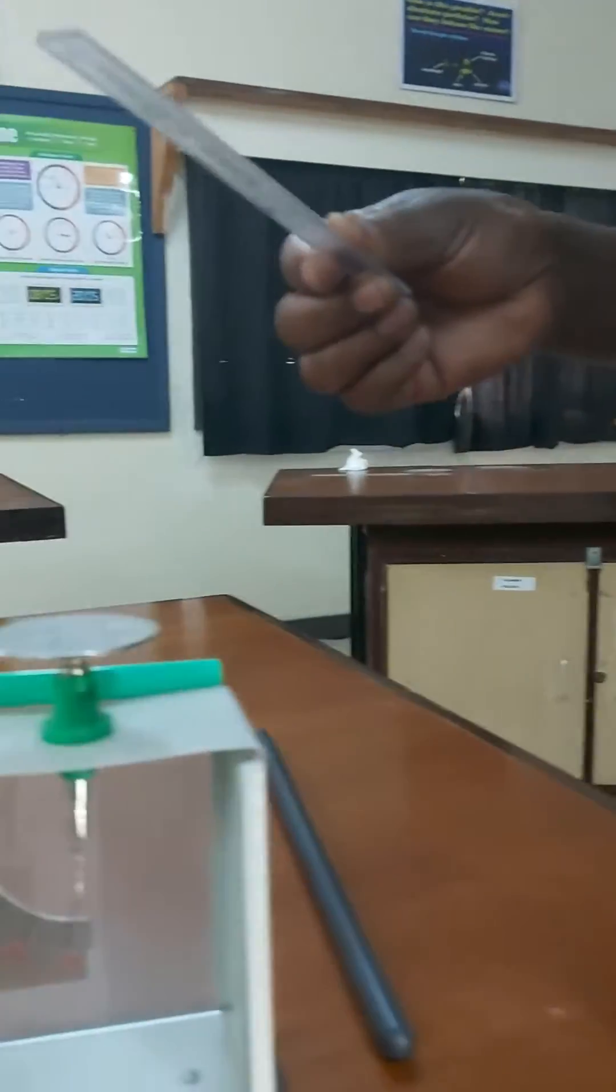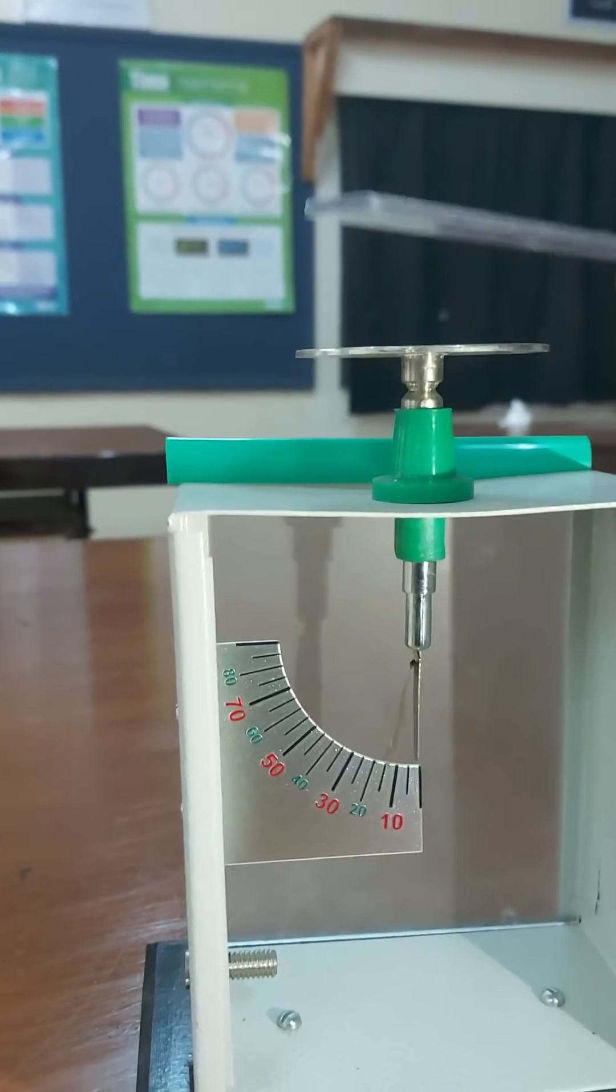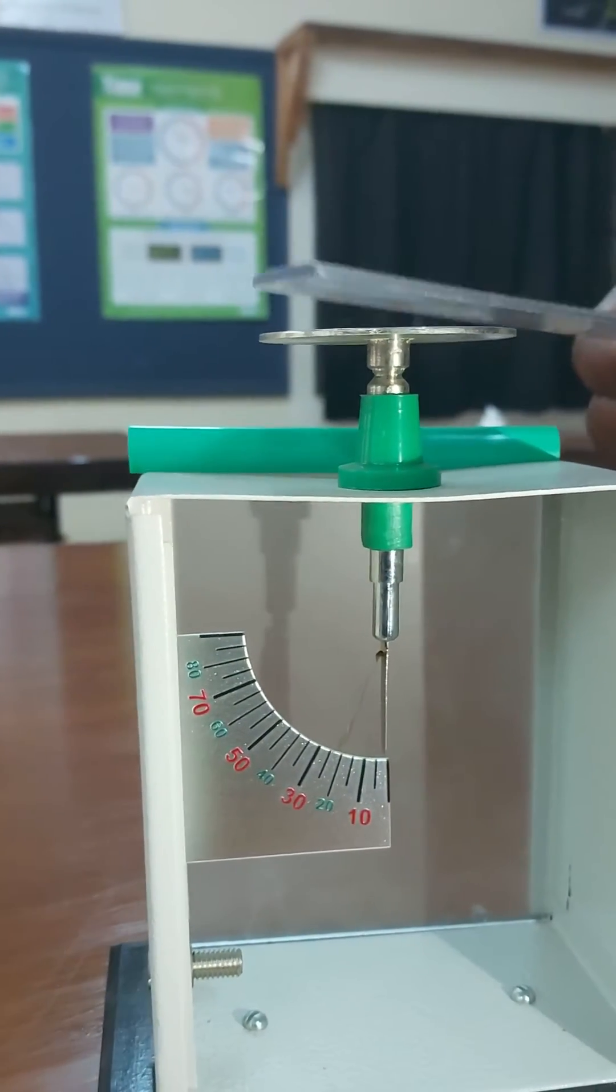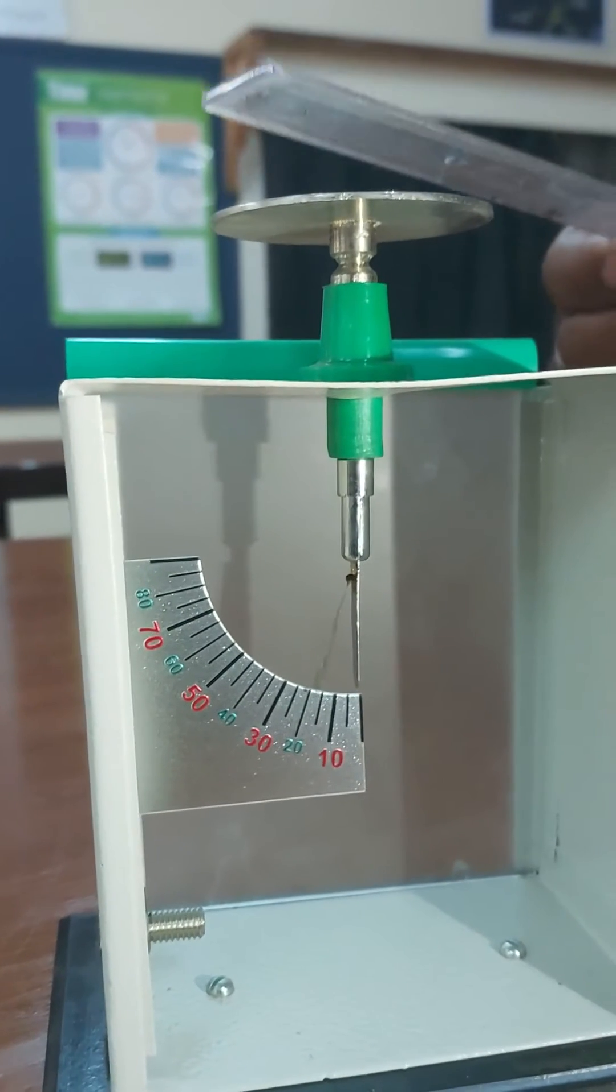When I bring it close to the cup of the electroscope, what you will notice is the leaf of the gold leaf electroscope diverges. The closer I bring it, the more the leaf diverges.